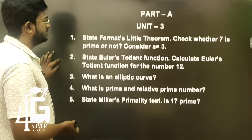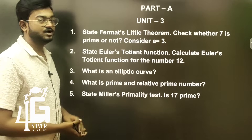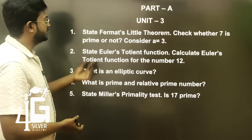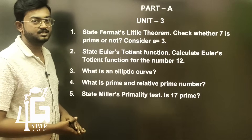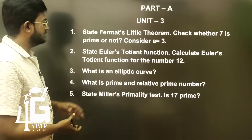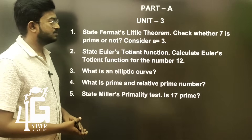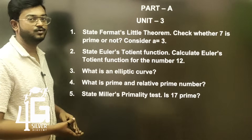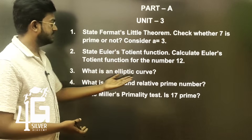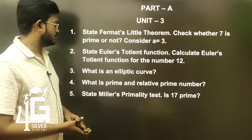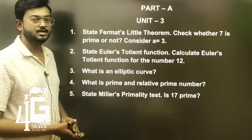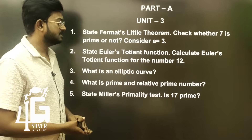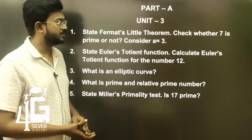Part A, Unit 3 important questions: State Fermat's little theorem. Check whether 7 is prime or not — consider A is equal to 3. State Euler's totient function. Calculate Euler's totient function for the number 12. What is an elliptic curve? What is a prime and relative prime number? State Miller's primality test — is 17 prime?